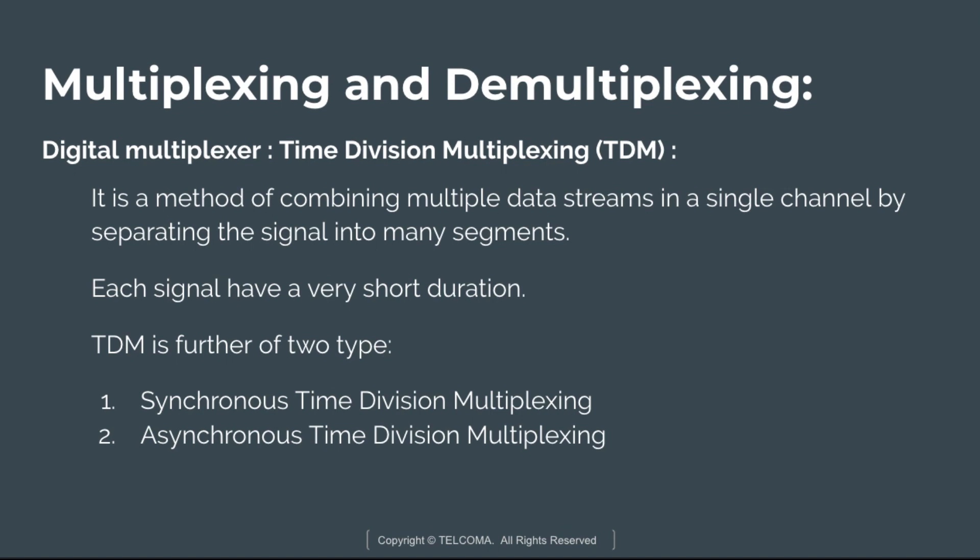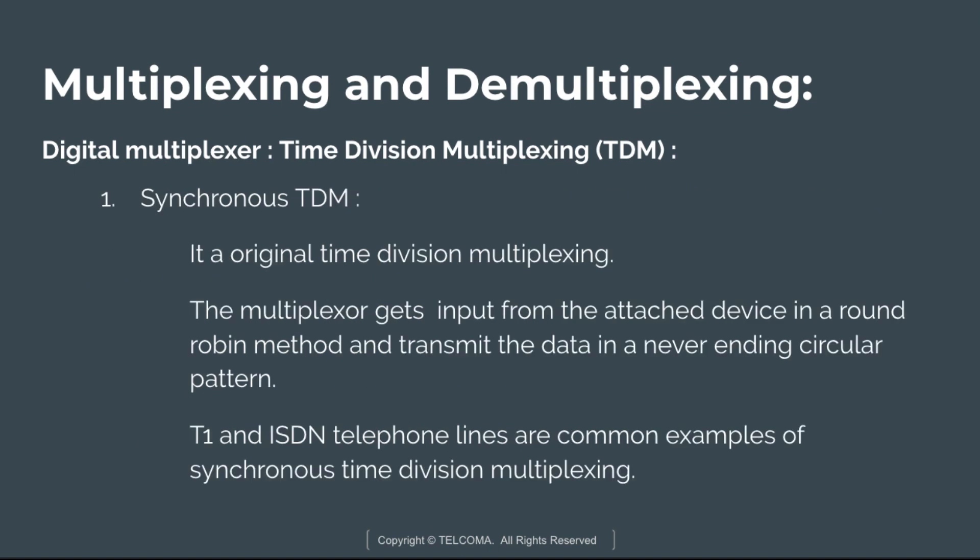Time Division Multiplexing (TDM) is a digital multiplexing method of combining multiple data streams in a single channel by separating the signal into many segments, each with a very short duration. Signals have the same frequency but are transmitted at different times to different users — they are divided on a time basis. TDM is of two types: Synchronous TDM and Asynchronous TDM.